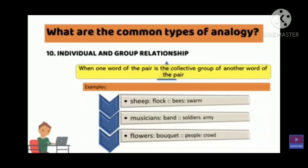So there we find the individual and after that the group he or she belongs to. So in this pairing we find individual and group relationship. I think you understood all 10 types of analogy, and now you can easily find which type of pairing you have to match. Best of luck and thanks.